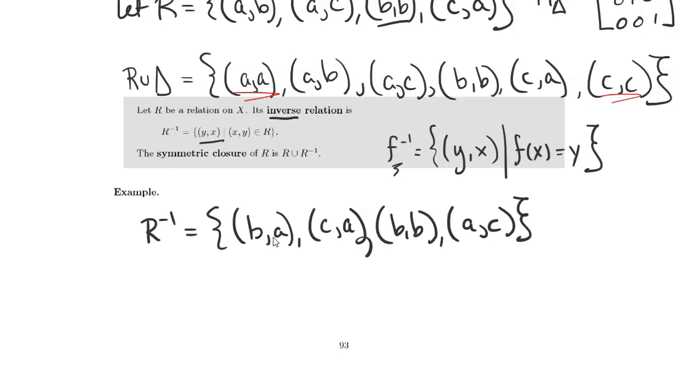So notice that R inverse is not a lot different than R because the only place that R wasn't already symmetric was this AB pair. So now we've got this BA pair.